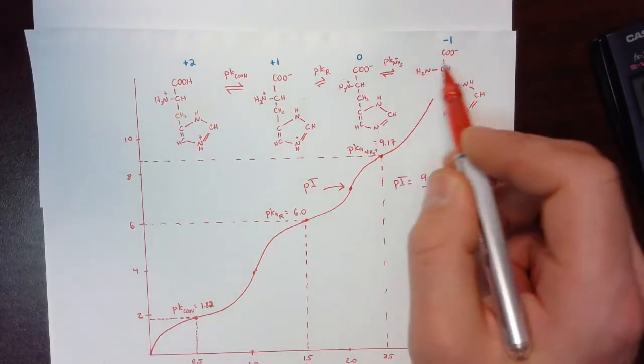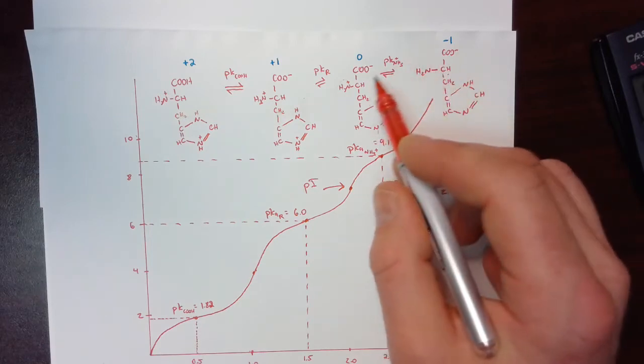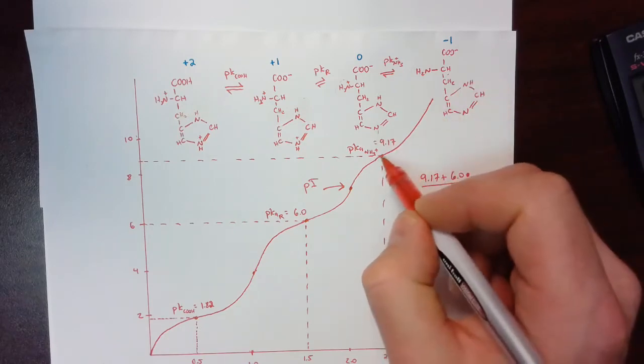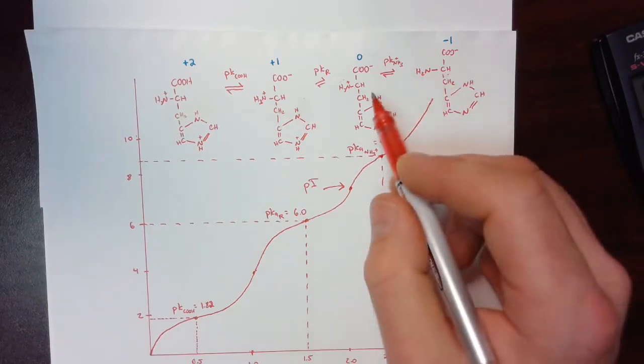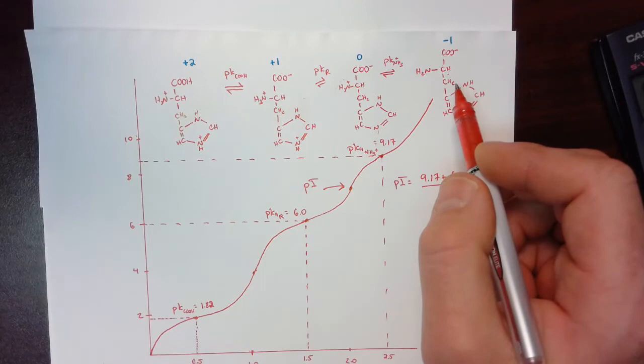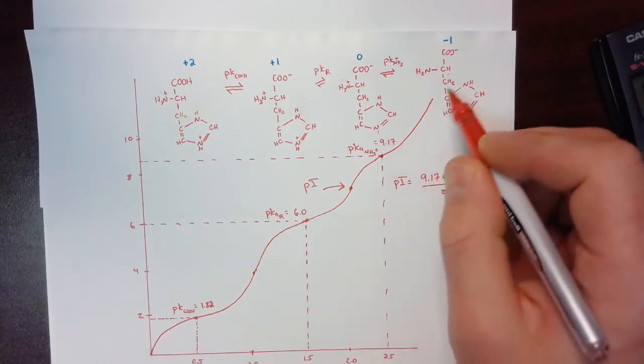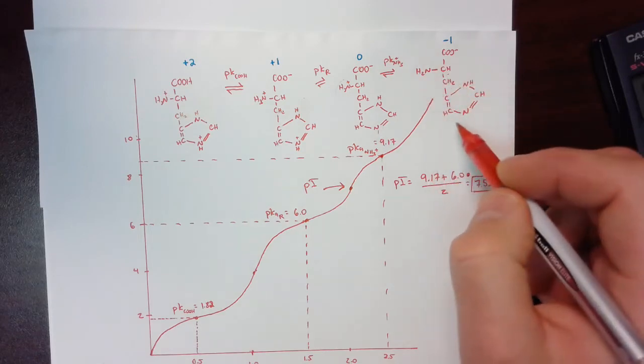At that point, these two are at 50% proportion. So before we get to the pKa, there's still more of this form here than there is this. But once we hit that pKa, then these two are at 50% concentration. And then continuing to add base above that, this form is what predominates.